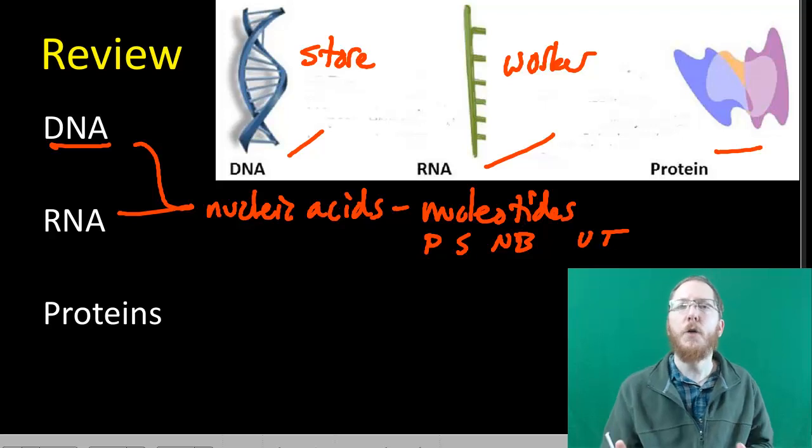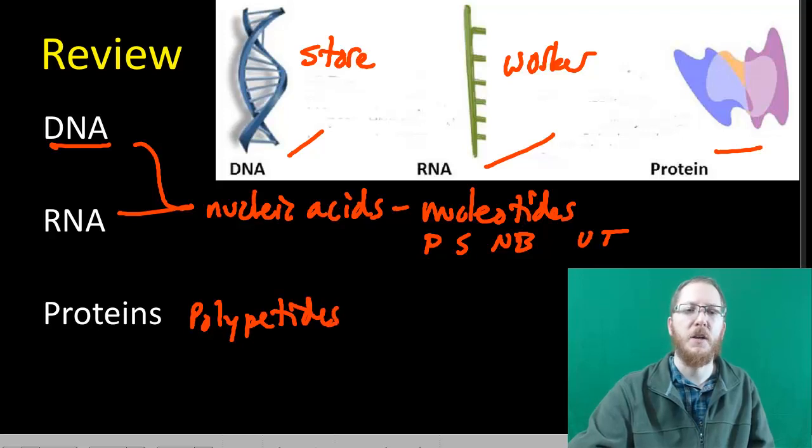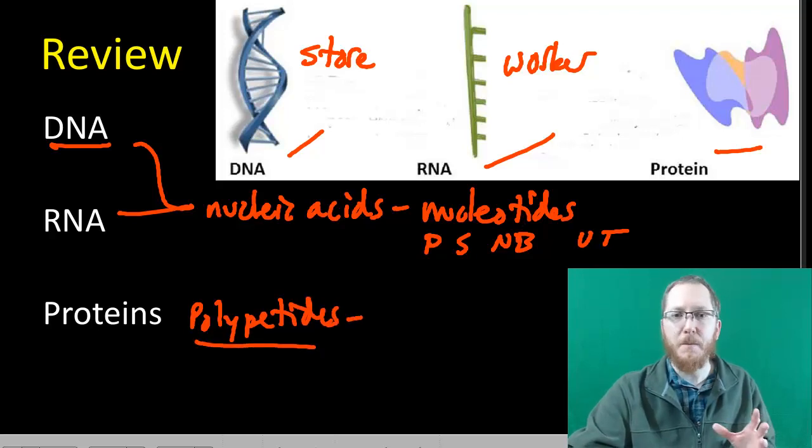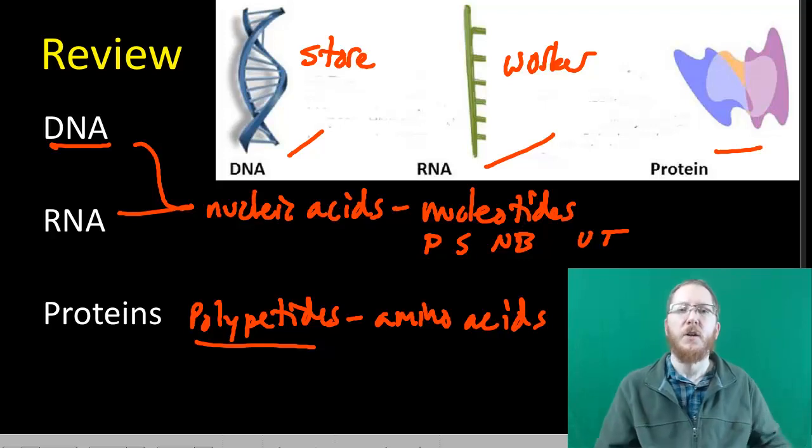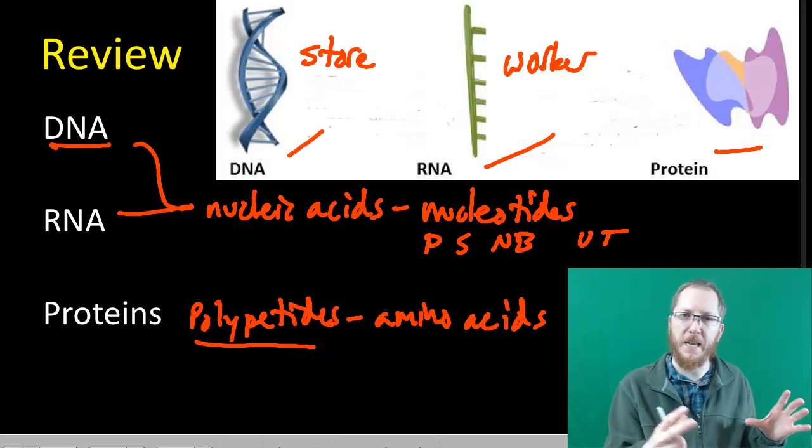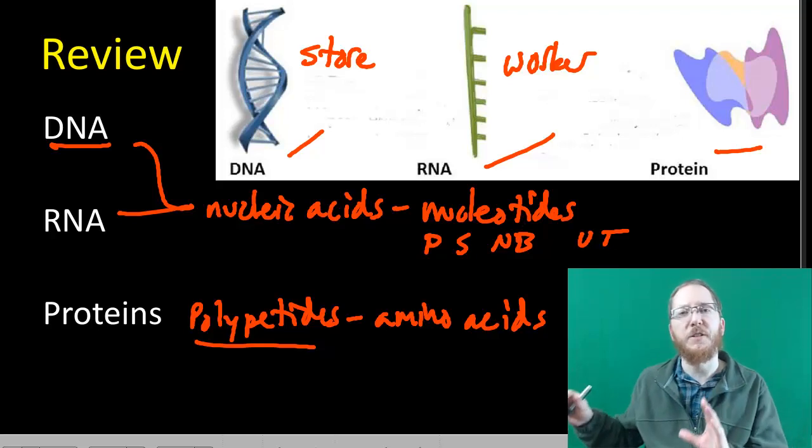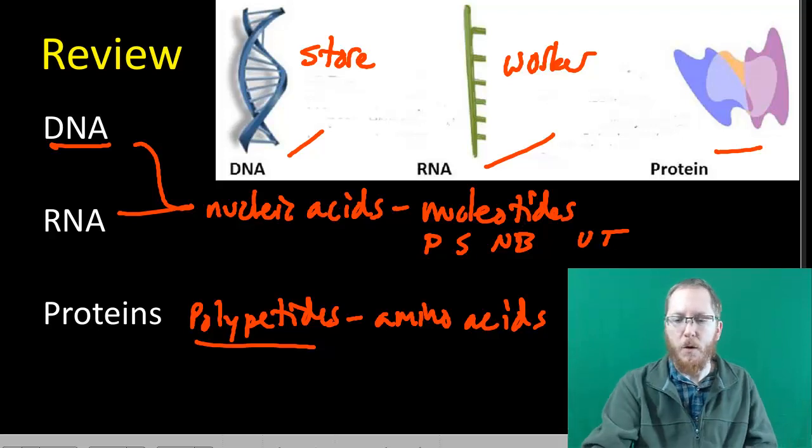When we look at protein, protein is going to be oftentimes called a polypeptide, or it's composed of polypeptides. So that's kind of like the polymer. And it will be composed of monomers called amino acids. So these are completely different, when we look at them structurally, than nucleotides. DNA and RNA are both very similar. They're the same type of organic molecule. Whereas proteins are different. They're a different type of macromolecule or organic molecule.